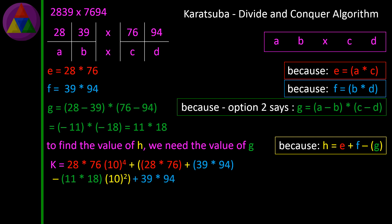K = (28×76)×10^4 + [(28×76) + (39×94) − (11×18)]×10^2 + (39×94), because K = E×10^N + H×10^(N/2) + F. Note that the value of N is 4.